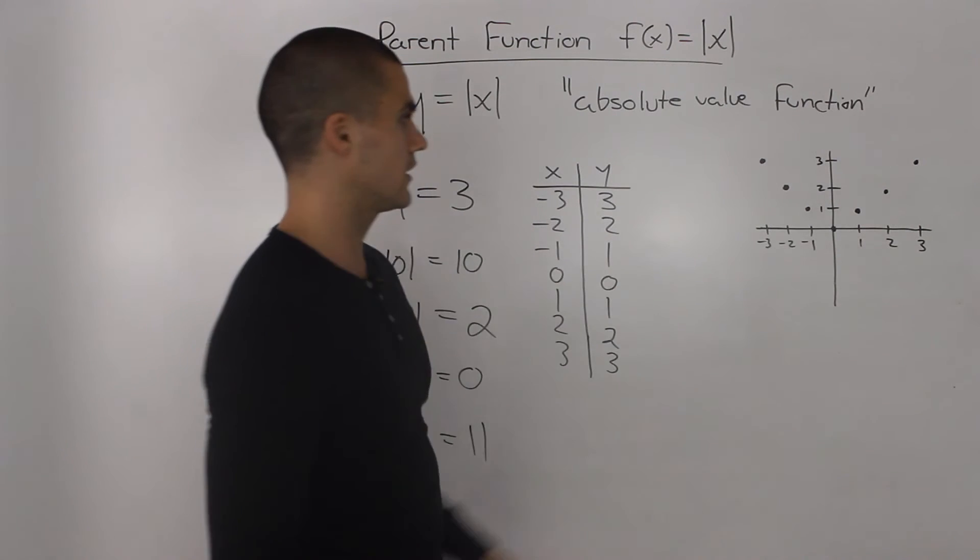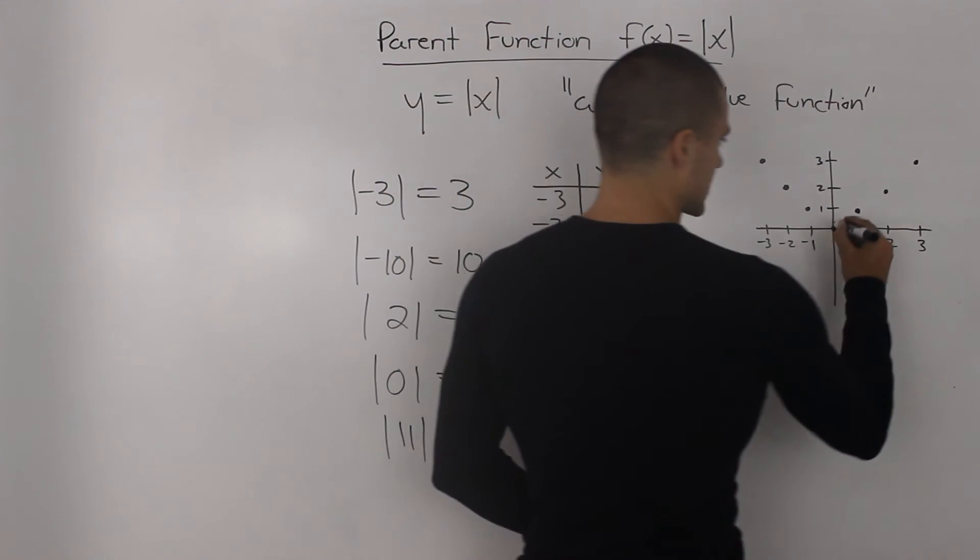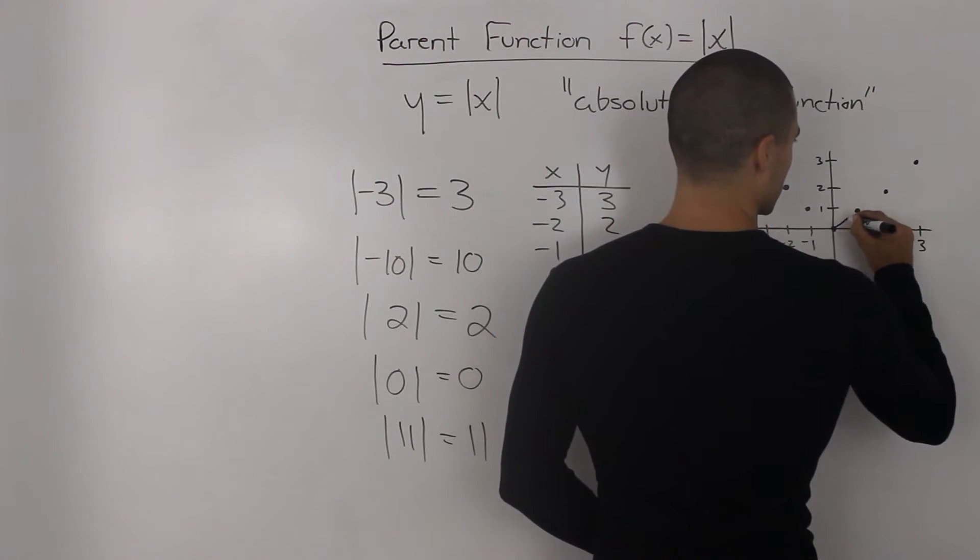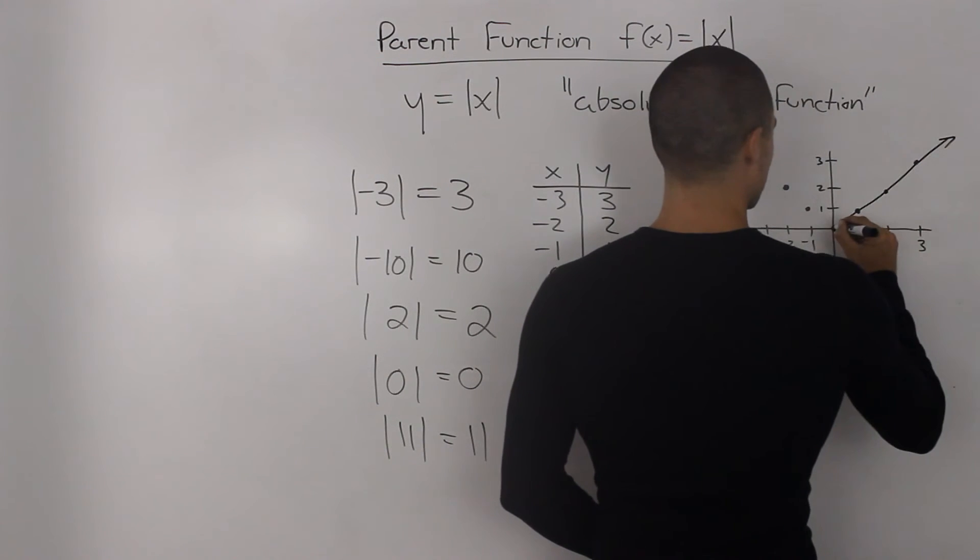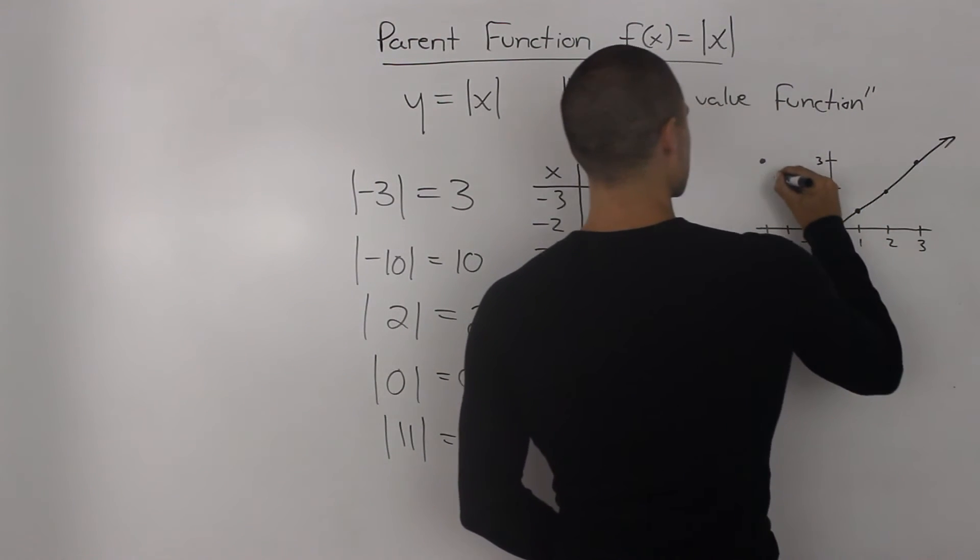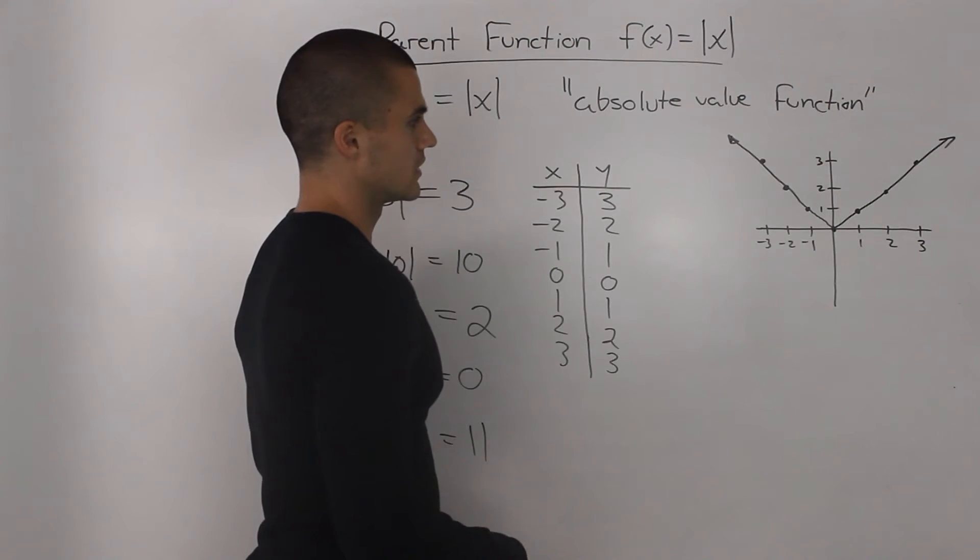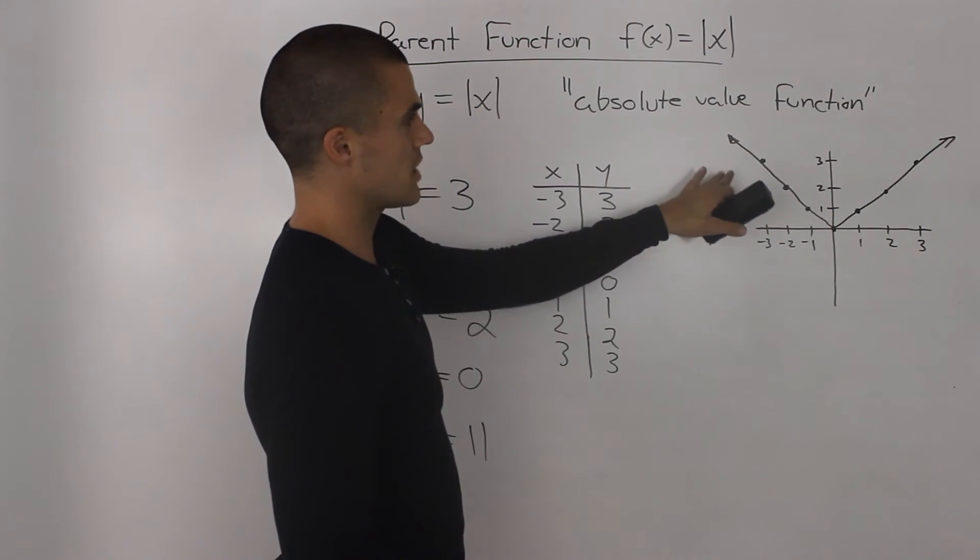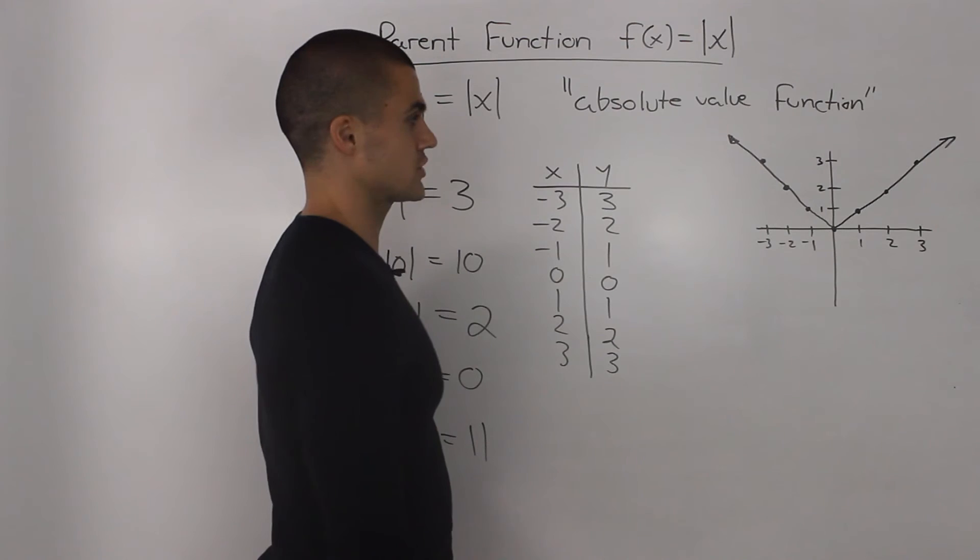Taking these points and then plotting it on the graph, let's connect these points to see what the shape would look like. So the shape would look something like this. That's how the shape of the absolute value function looks like.